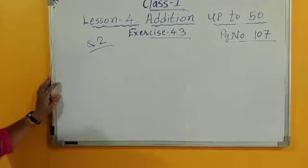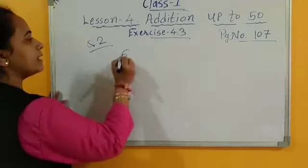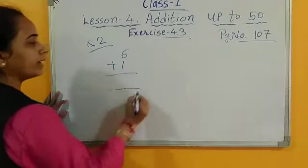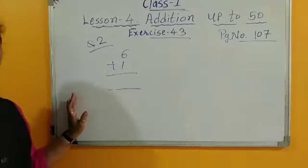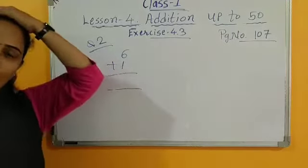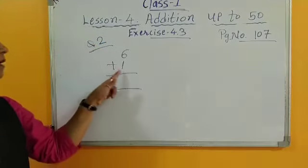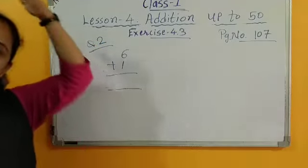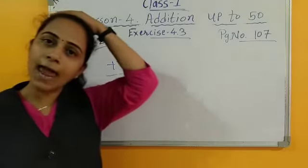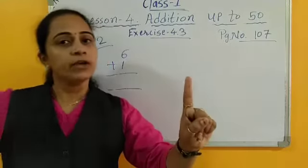Only numbers are given. So how to add numbers? So first one, 6 plus 1. 6 plus 1, so what? 6 is in, keep it in your mind. Keep 6 in your mind. And how many numbers add? Only 1.